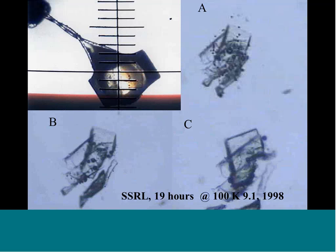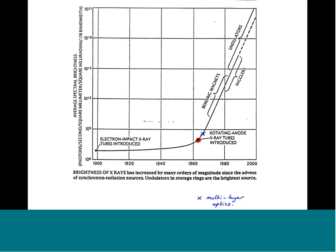The brightness of synchrotrons has increased incredibly. From electron impact X-ray tubes introduced around the late 1890s up until 1960, there wasn't much increase in average spectral brightness — photons per second per square millimetre per square milliradian per 0.1% bandwidth. But bending magnets at second-generation synchrotrons, and then wigglers and undulators at third-generation synchrotrons, have taken us up nine orders of magnitude from in-house to synchrotron experiments. And now the free electron laser has taken us even more orders of magnitude beyond that.